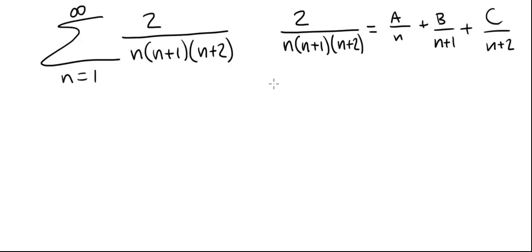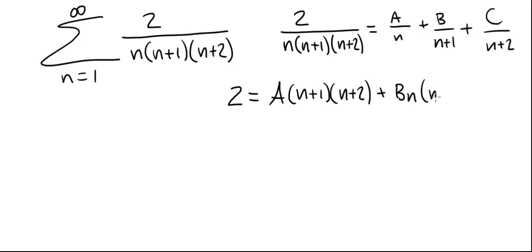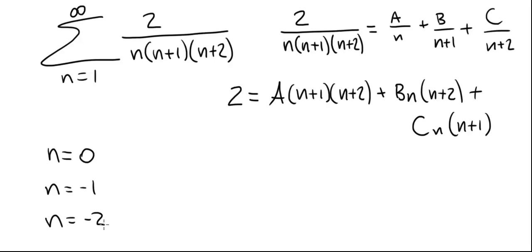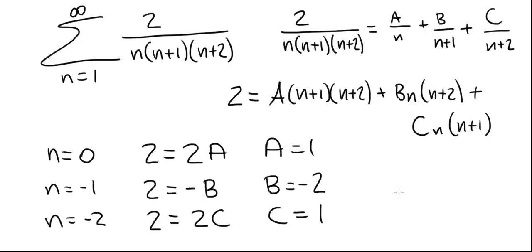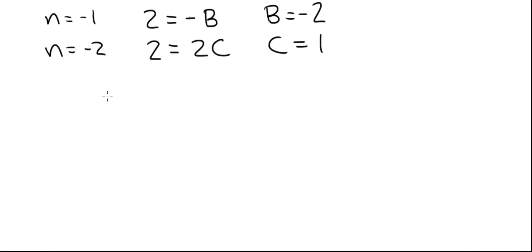Multiplying both sides by the denominator on the left, we get 2 equals A times n plus 1 times n plus 2, plus B times n times n plus 2, plus C times n times n plus 1. Plugging in n equals 0 gives us 2 equals 2A, so A equals 1. Plugging in n equals minus 1 gives 2 equals minus B, so B equals minus 2. Plugging in n equals minus 2 gives 2 equals 2C, so C equals 1.